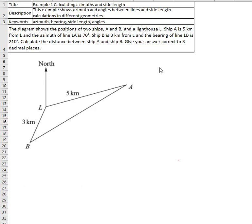In this example, we have two ships and a lighthouse. The lighthouse is denoted as L here, and ship number one which is ship A and ship B. What do we have?